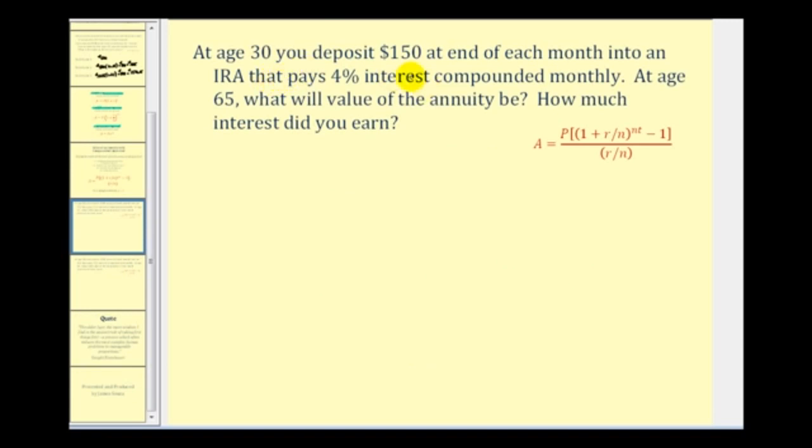At age 30, you deposit $150 at the end of each month into an IRA that pays 4% interest compounded monthly. At the age of 65, what will the value of the annuity be, and how much interest did you earn? So this would be a good example of if you start saving early, would saving $150 a month be enough to retire on? Let's see if we can determine all of the values here in the formula.